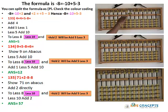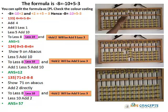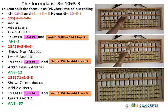Let's move to the next problem: 9 plus 5 minus 8 plus 6. So, 9 on the abacus. Add 5 — Add 5 will be Less 5, Add 10. Less 8 — Less 8 will be Less 10, Add 5, Less 3.